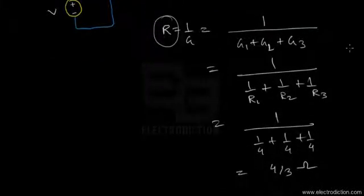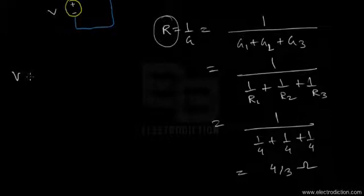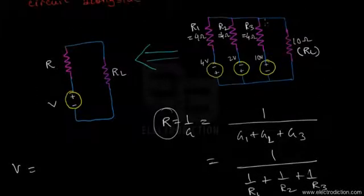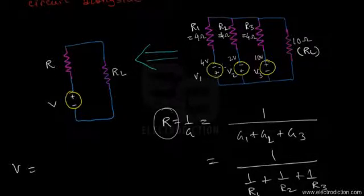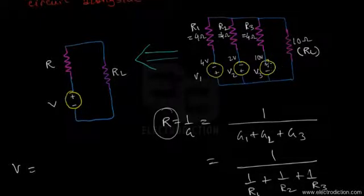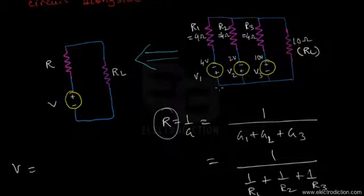Now let's find the value of the net equivalent voltage. Looking at the original figure, V1 and V2 have polarities opposite to that of V3. We follow the convention of taking V3's polarity as positive, while V1 and V2 are treated as negative because they are against the selected reference polarity.